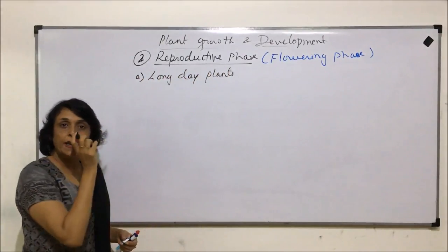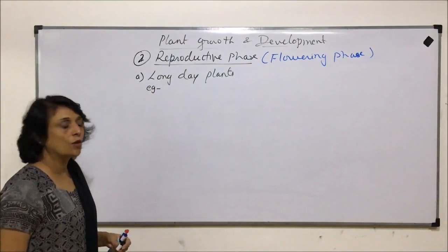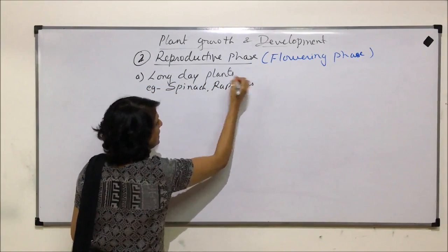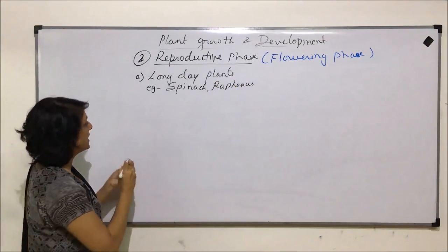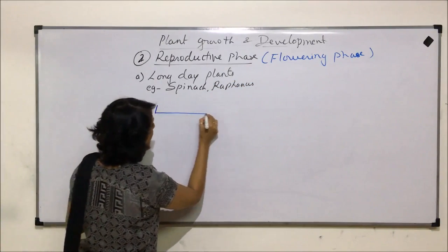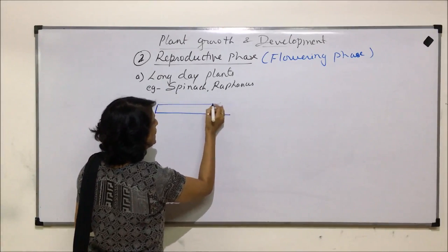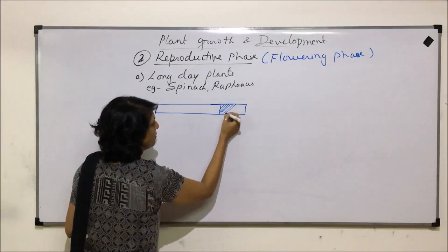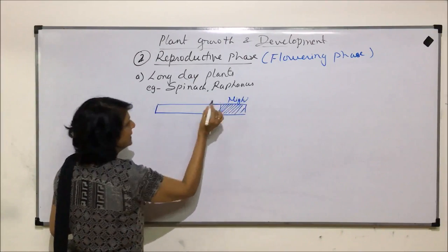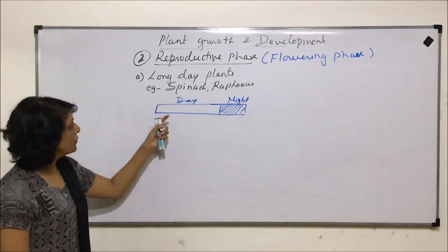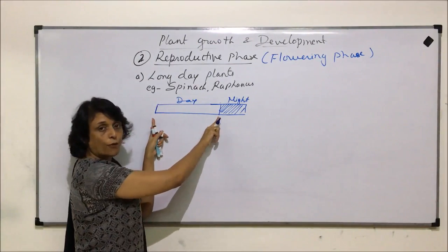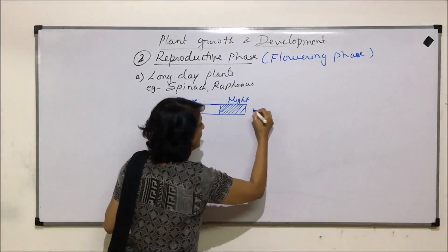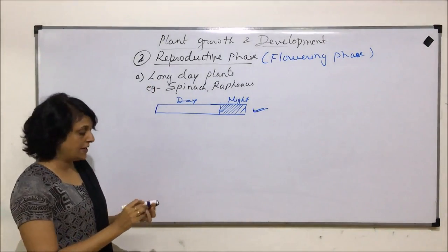Let us start with long day plants and look at their examples: spinach and Raphanus. These are the most important examples. Now let us take a situation when these long day plants are exposed to certain durations of light and dark phases. The highlighted portion is the night and the other portion is the day duration. From this it is clearly visible that we are giving a longer photoperiod to the plant and a shorter night period.